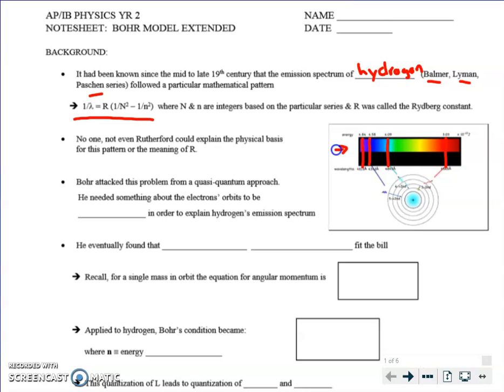And it was this equation: if you take one over the wavelength of a particular line — that's the color — it equals some constant R, multiplied by one over N squared minus one over n squared, where N and little n are just integers. The R was called the Rydberg constant. Even though this equation could reproduce the spectral lines for what we see, as well as into the infrared and ultraviolet, no one could explain the physical basis for it — not even Rutherford after the gold foil experiment and the nuclear model. No one knew what the meaning of R was; it was just a constant that held it all together.